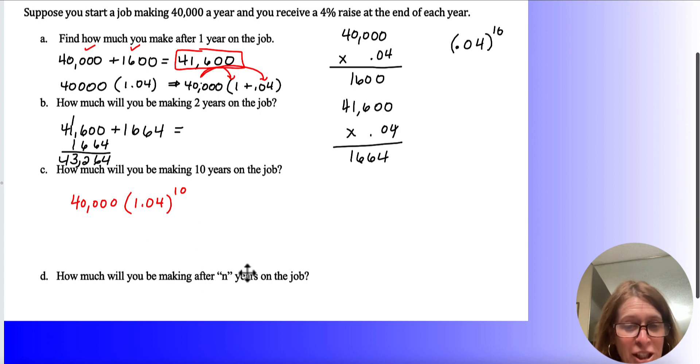All right. So our general equation for n years on the job would be 40,000 times 1.04, and if n is years, to the n power. So I might use a variable or a function notation, a of t, the amount, I'm sorry, a of n, the amount at n years.